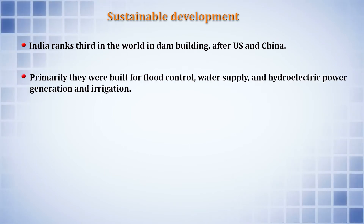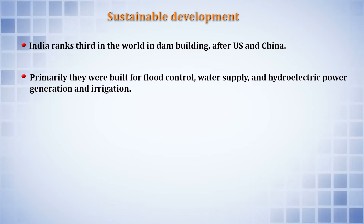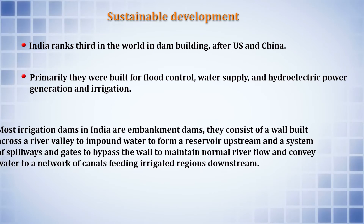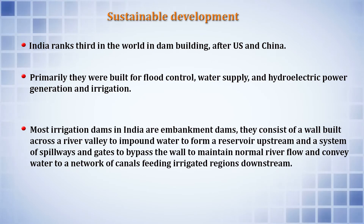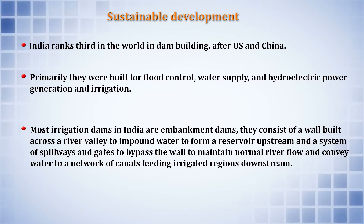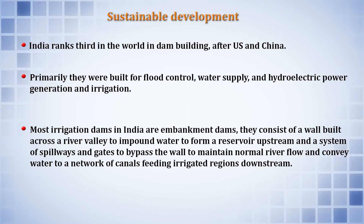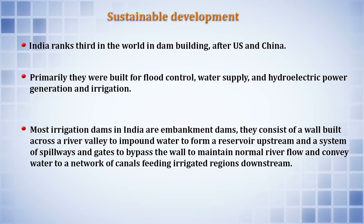Primarily, these dams were built for flood control, water supply, hydroelectric power generation, and irrigation. Most of the irrigation dams in India are embankment dams — consisting of a wall built across a river valley to impound water and form a reservoir upstream, with a system of spillways and gates to maintain normal river flow and convey water to a network of canals feeding irrigated regions downstream.